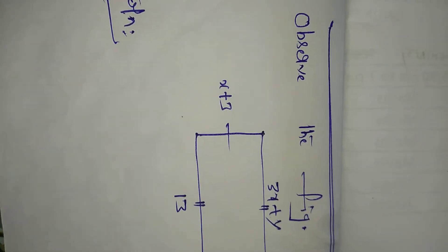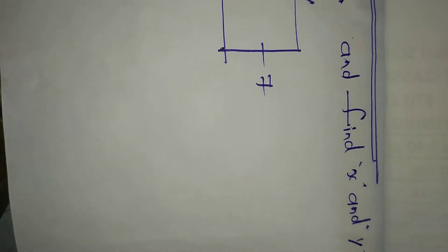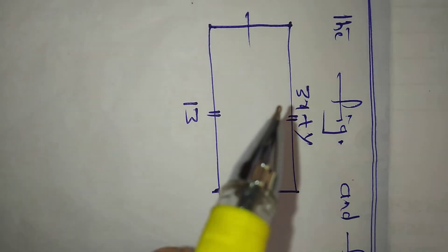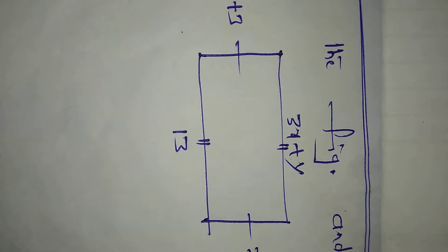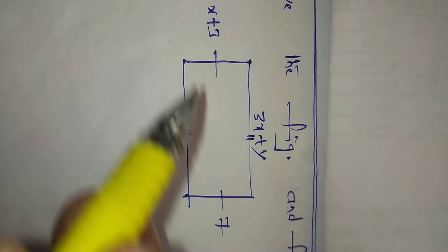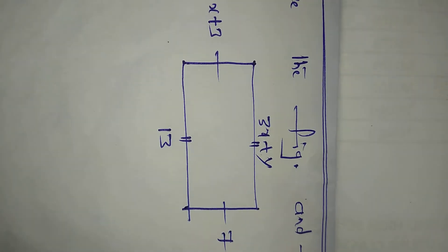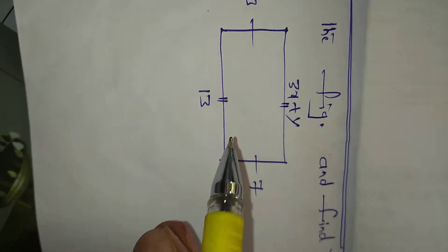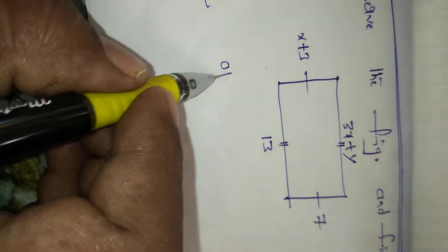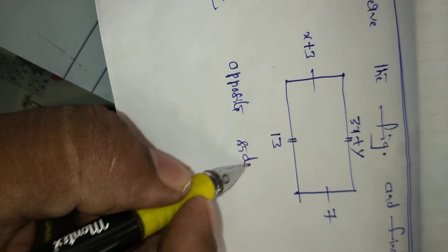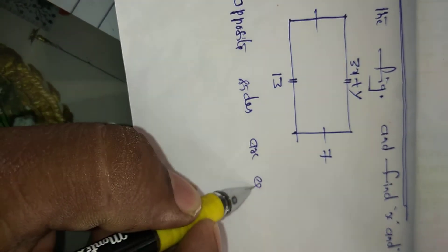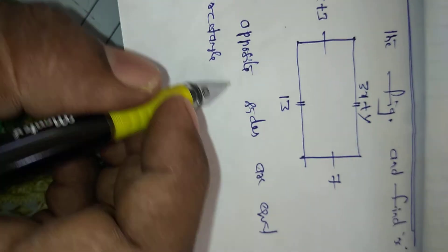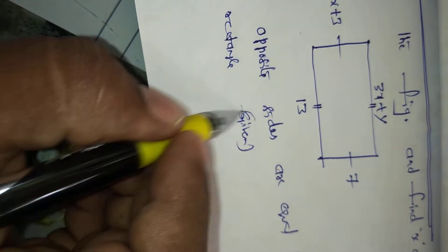Coming to the next question: observe the figure and find x and y. The figure is in the shape of a rectangle. In a rectangle, the opposite sides are equal. Here length is equal and breadth is also equal. Here breadth x plus 3, here breadth is 7. These two are equal. And 3x plus y equals 13. According to the figure, opposite sides are equal in a rectangle. Which is given, you can write clearly in the bracket.